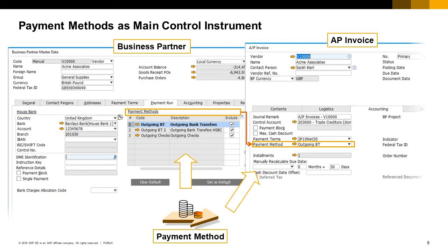You can define the banks with which your company works within the banking setup area in the administration module. You can define more than one branch or account as house banks in SAP Business One, in the House Bank Accounts window in the banking setup area. In the vendor business partner master data, under the Payment Terms tab, define the business partner bank details. This information will be used for payments created by the Payment Wizard.